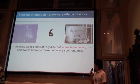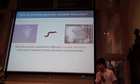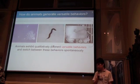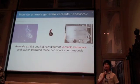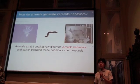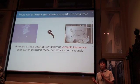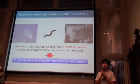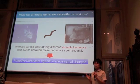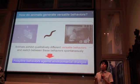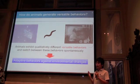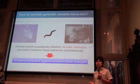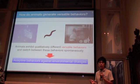As you can see in these movies, animals, even primitive species, exhibit qualitatively different versatile behaviors and switch between these behaviors spontaneously according to the situation encountered. Based on this versatility of animal behavior, animals are able to generate adaptive behaviors against environmental changes. But in contrast, most robots fail to negotiate unpredictable, complex environments and environmental changes. This is because most robots have been designed for specific environments with an emphasis on optimality and efficiency, not versatility of behaviors.